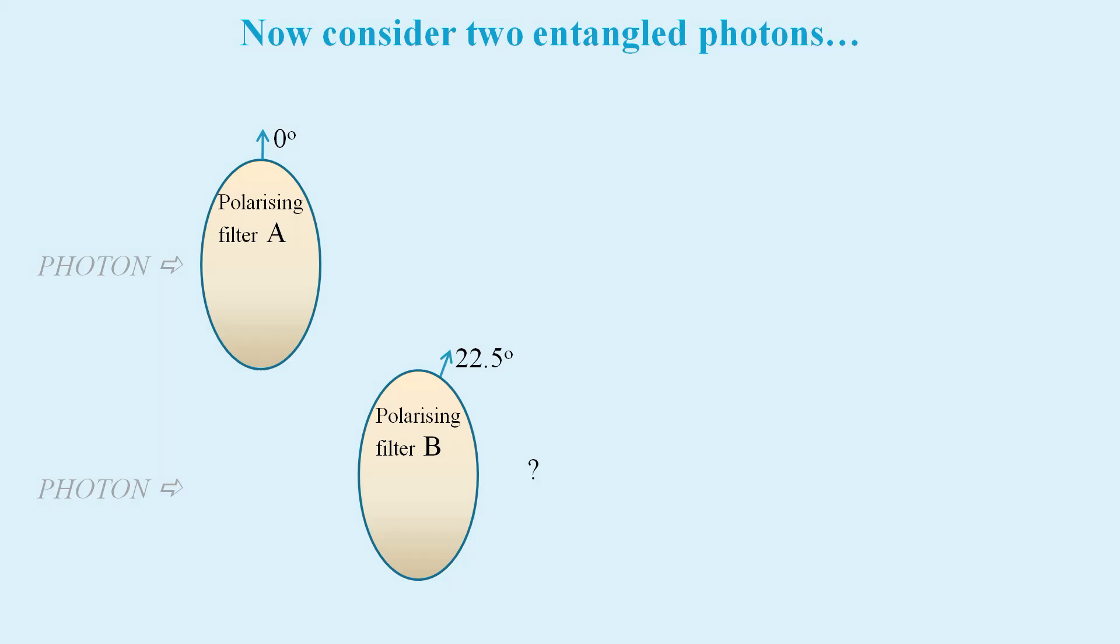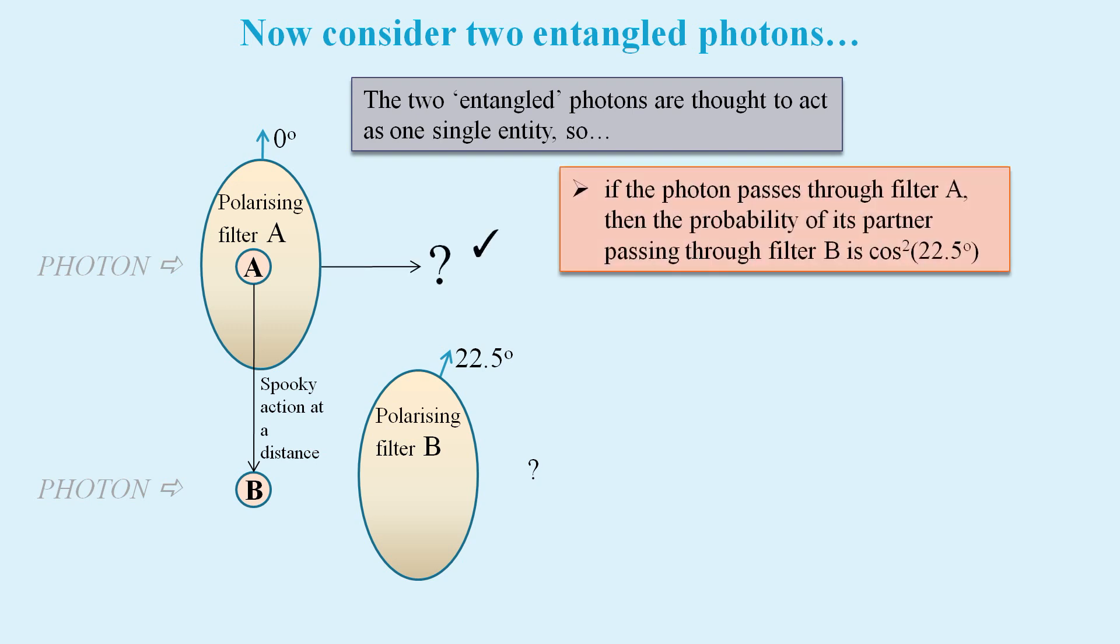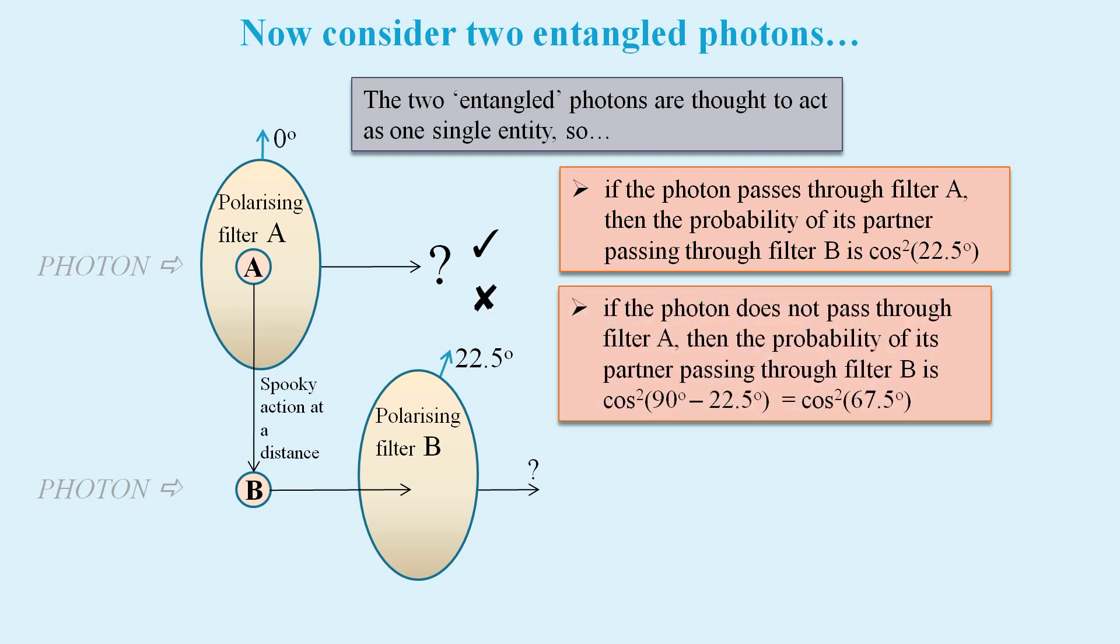Now we separate the two filters and we send one of the entangled pair of photons through each of them. The entangled photons are supposed to act as one entity, and so if photon A passes through its filter, then by spooky action at a distance, photon B will act as though it has the same polarization as photon A's filter. But if photon A fails to pass through its filter, then photon B will act as though it has a polarization perpendicular to the alignment of photon A's filter.